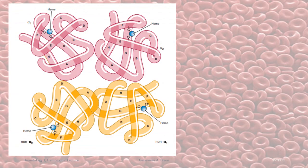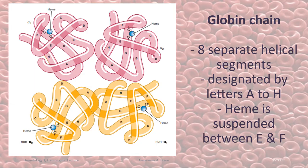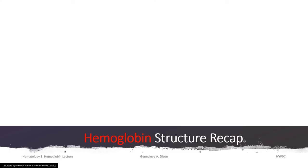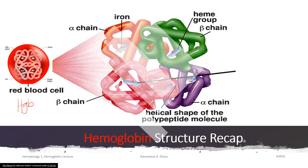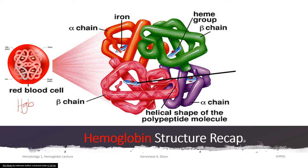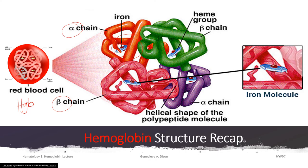Just to reiterate: a globin chain is made up of eight separate helical segments from the letter A to the letter H, and the heme will be suspended between the letters E and F. A quick recap about the hemoglobin structure: the red blood cell is mostly composed of hemoglobin, which is made up of four subunits — four heme and four globin chains. An adult hemoglobin is made up of two alpha chains and two beta chains. The iron molecule that carries oxygen is made up of ferrous iron and the protoporphyrin ring.